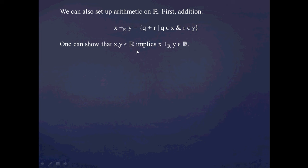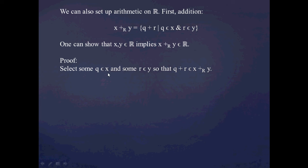One can show that x and y being Dedekind cuts implies that x plus y is also a Dedekind cut, and that's what I'm going to show now. First I'd like to show that x plus y is not equal to the empty set — to do that, just pick some q from x and some r from y, and q plus r is guaranteed to be in x plus y. Showing that x plus y is not equal to all of the rational numbers follows from x not being equal to the rationals itself, since it's a Dedekind cut, and the same for y.